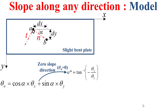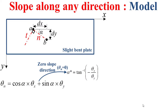Based on this formula, we can determine the zero slope direction along which theta n is equal to zero. The angle alpha asterisk is the angle that defines this direction, and it should be equal to arctan of minus theta x divided by theta y.